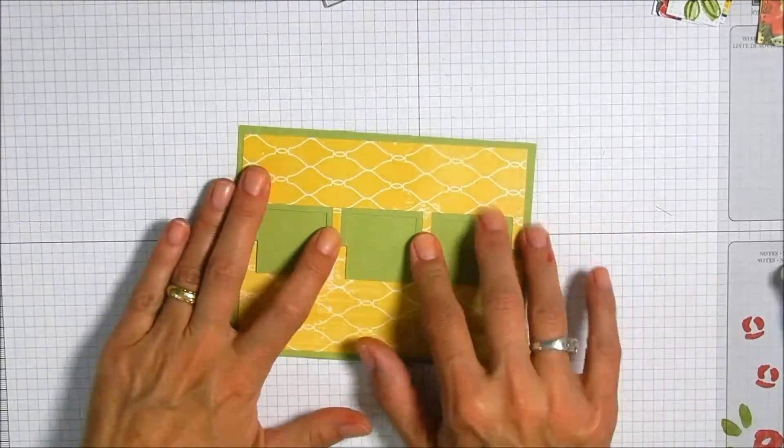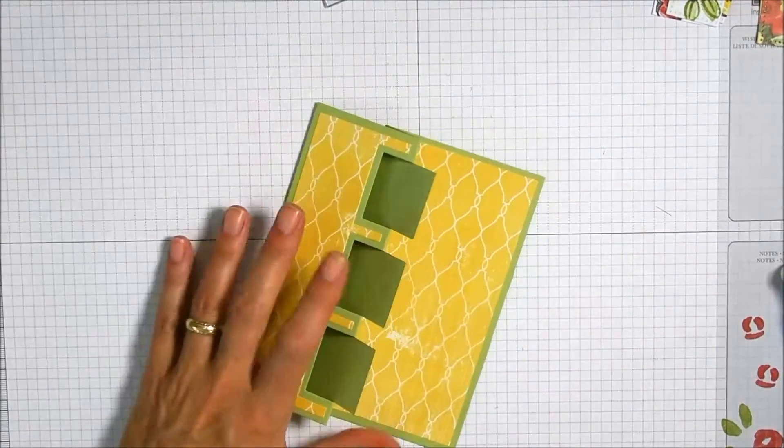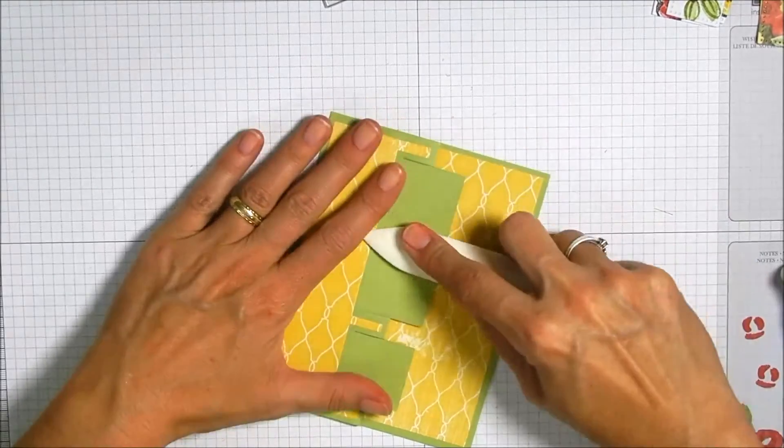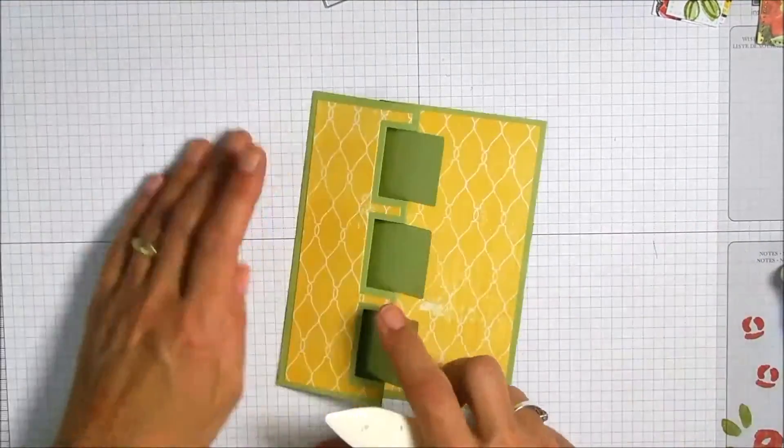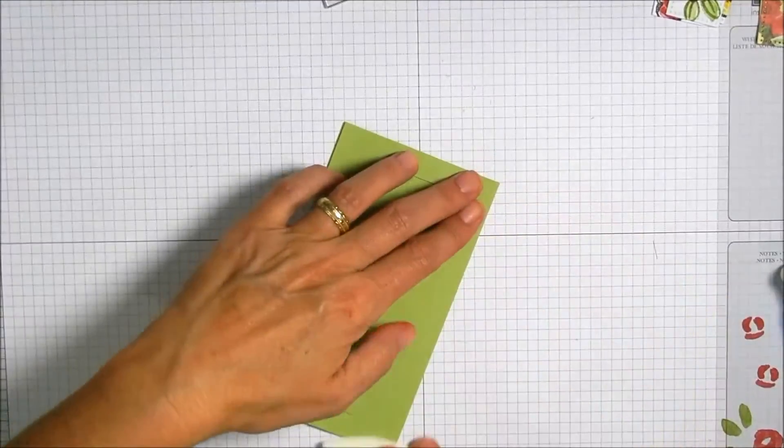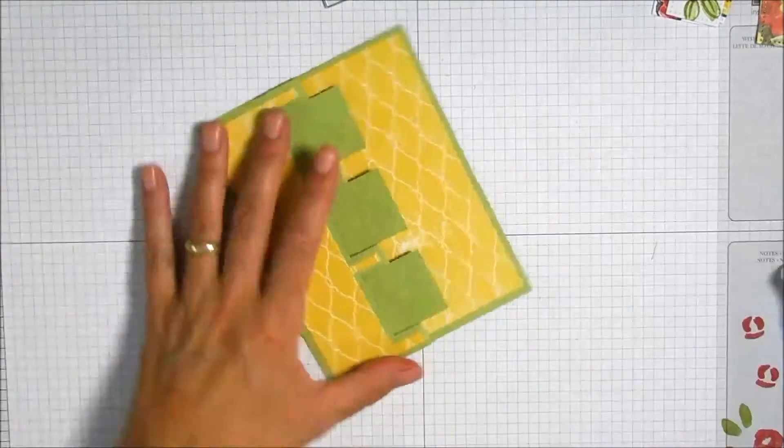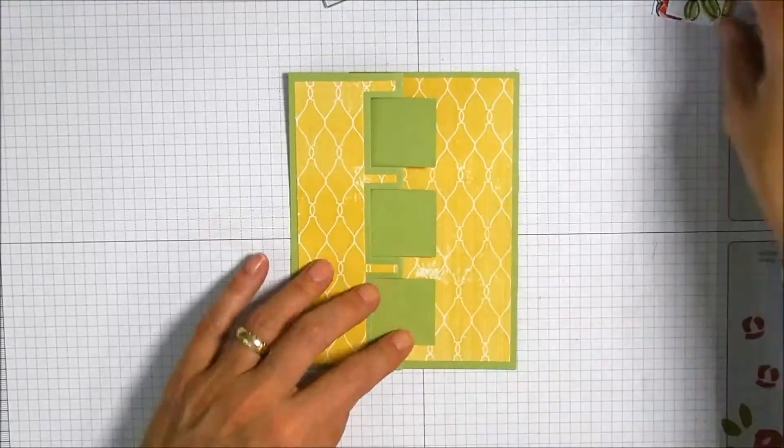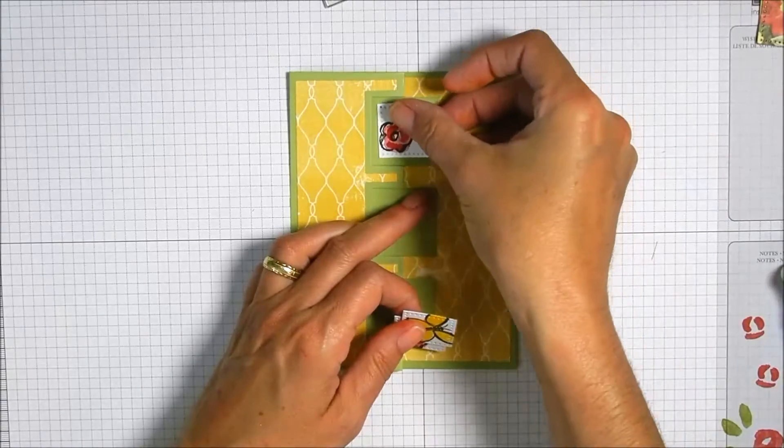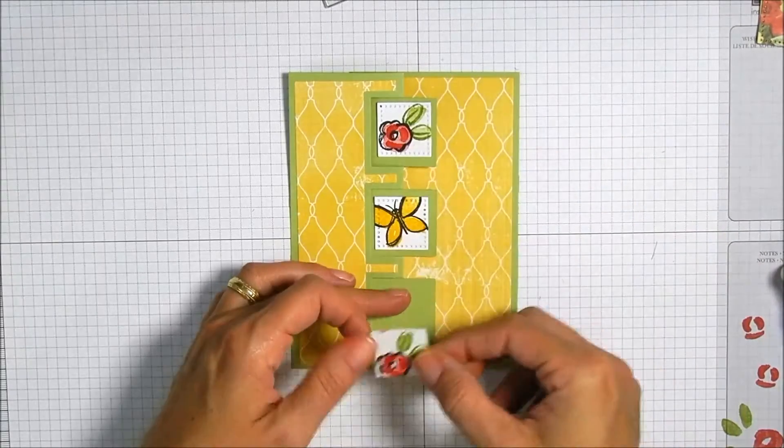Now we're gonna fold that one side toward us and the little side out. I'm just gonna take my bone folder and kind of burnish those folds down because otherwise the Flip It tends to want to flip, which you know that's what it's made to do.